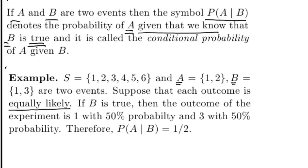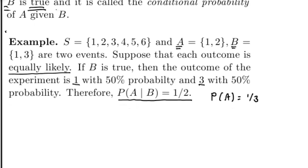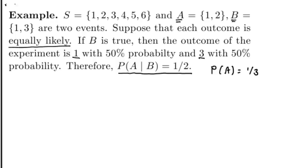You know that B is true — that is, when you toss the dice, it came up either 1 or 3. Since each outcome is equally likely, the probability of 1 is 50% and the probability of 3 is 50%. If the dice came up 1, then A will be true. If the dice came up 3, then A will be false. So when I know that B is true, A will be true 50% of the time. The conditional probability is 1/2, compared to the unconditional probability of 1/3. Knowing that B is true makes it slightly more likely that A is true.